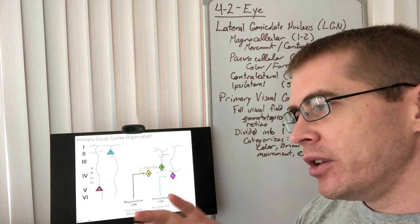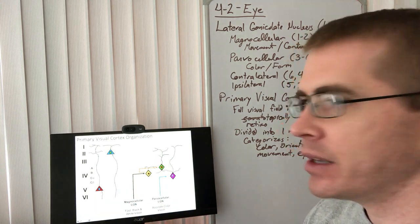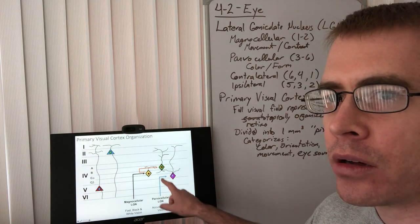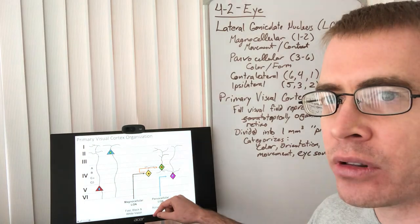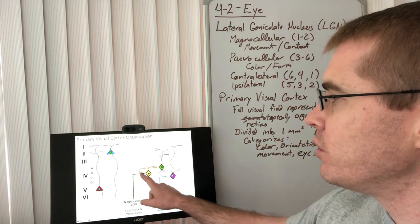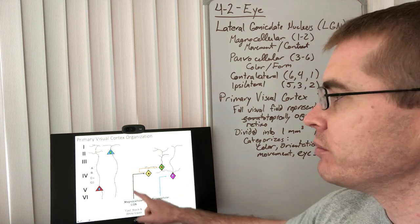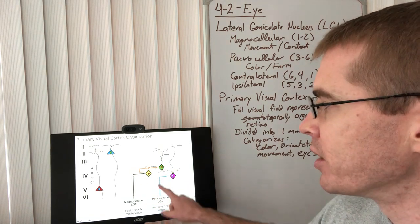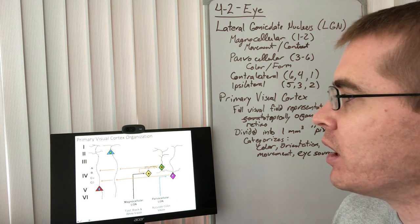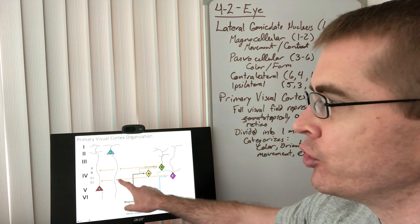The LGN is getting information about contrasting color, movement, and forms, combining it together and sending it to the input layer of the occipital cortex. The input layer of the cortex is always layer four. Those input cells in layer four are getting information from the parvocellular pathway and the magnocellular pathway, and then send that information out to the pyramidal cells located in layers two and five.